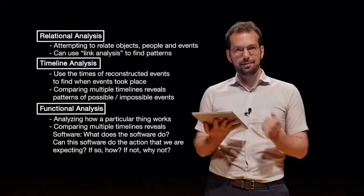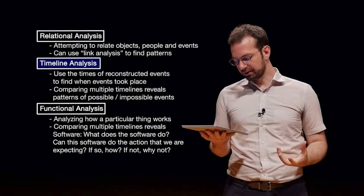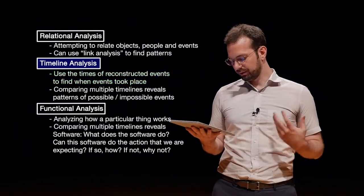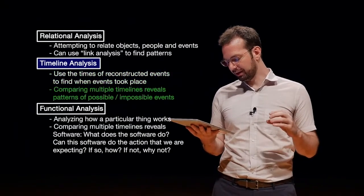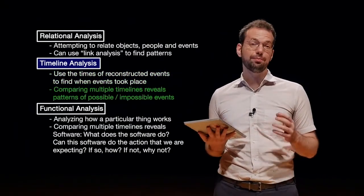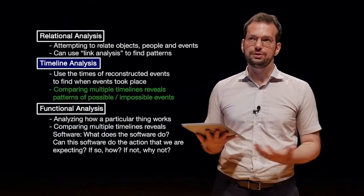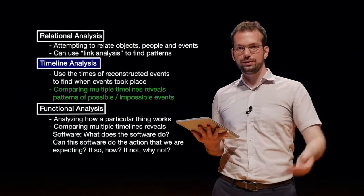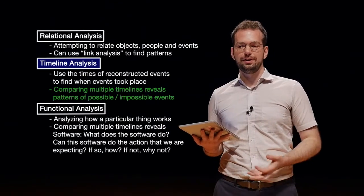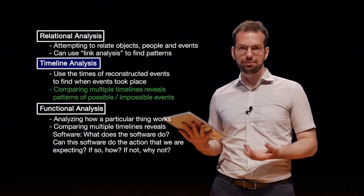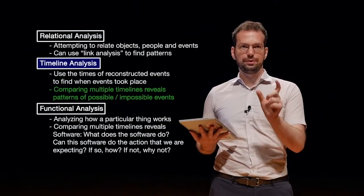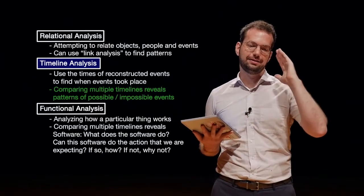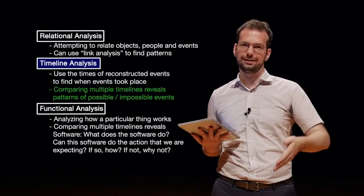Next is timeline analysis. We use the times of reconstructed events to find when events took place. We can also compare multiple timelines to reveal patterns of possible or impossible events. You see this a lot whenever people are interrogating somebody — they say, where were you last night after 10 PM? And they say, well, I was at the movies with my friend. But the police already have a timeline that says the murder was committed at, say, 9:30 PM.